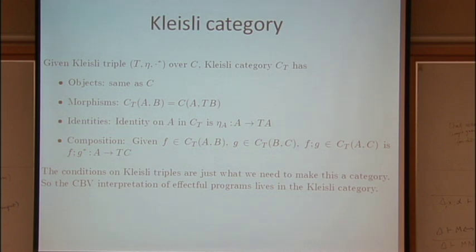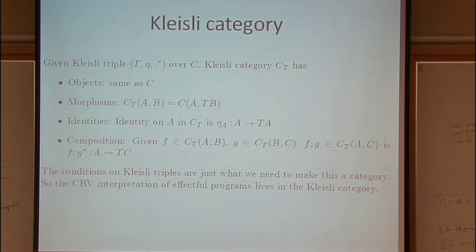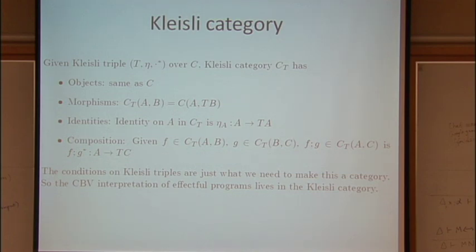So we've got this category which has got a Cartesian closed structure on it and a monad on top — an endofunctor that takes objects back into objects in the same category. There are a couple of other categories we can construct once we've got this base category with a monad, and one of them is the Kleisli category.